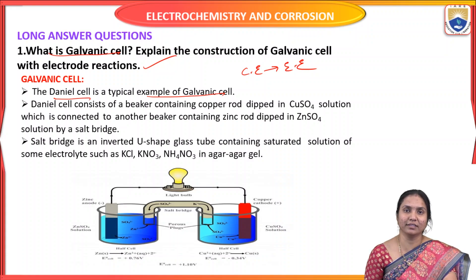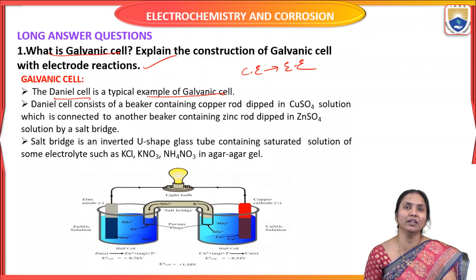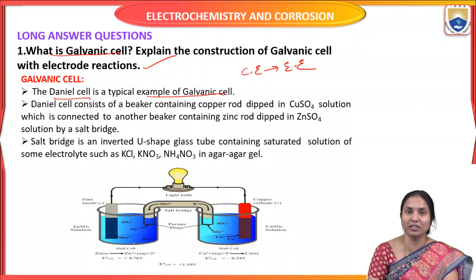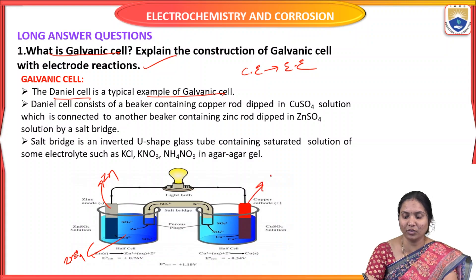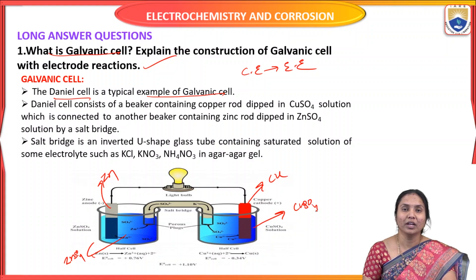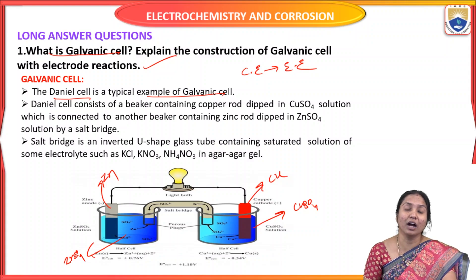How to construct this Daniel cell? This Daniel cell consists of a beaker with two electrodes — a zinc electrode and a copper electrode. The zinc electrode is dipped in zinc sulfate solution and the copper electrode is dipped in copper sulfate solution. As seen in the image, the zinc electrode is dipped in zinc sulfate solution and the copper electrode is dipped in copper sulfate solution.